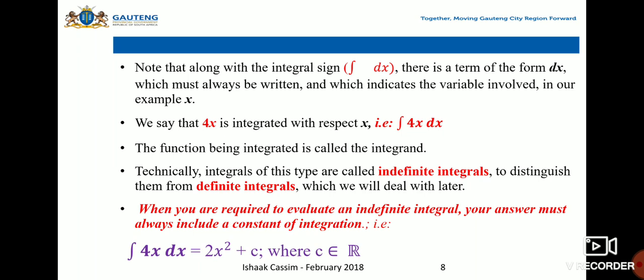This is also known as the variable after the function being integrated. Thus, to integrate 4x, we write it as follows along with the integral sign: ∫4x dx, where dx indicates the variable of integration. We say that 4x integrated with respect to x is the integrand, the function being integrated.